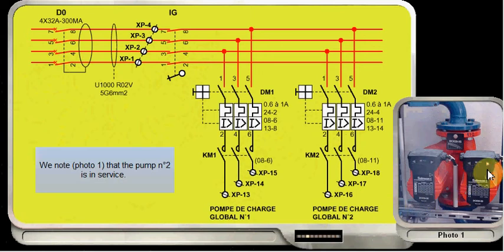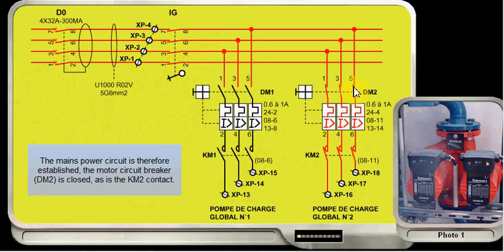We note photo number 1 that pump number 2 is in service. The main power circuit is therefore established. The motor circuit breaker DM2 is closed, as is the KM2 contact.